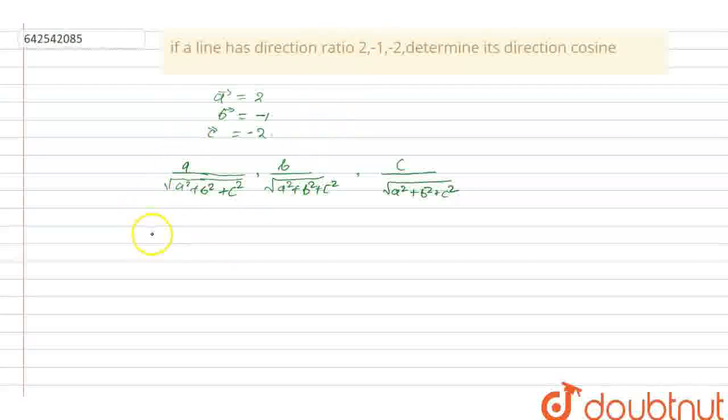so this will be 2 upon under root A square, that means 4, 4 plus 1 plus 4. And here is minus 1 upon under root, similarly, 4 plus 1 plus 4.